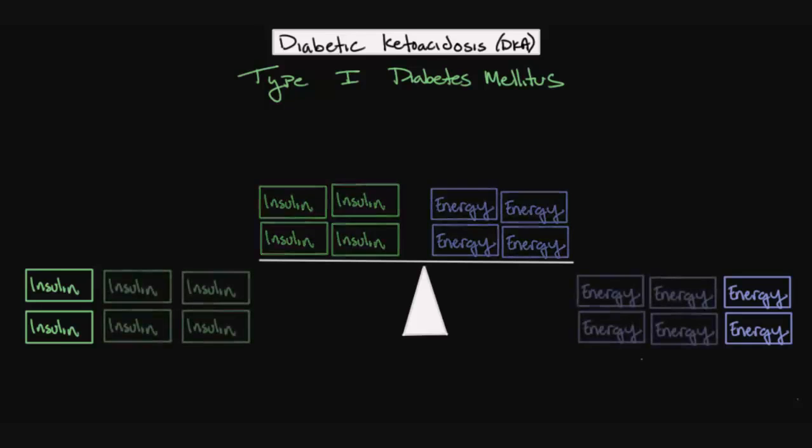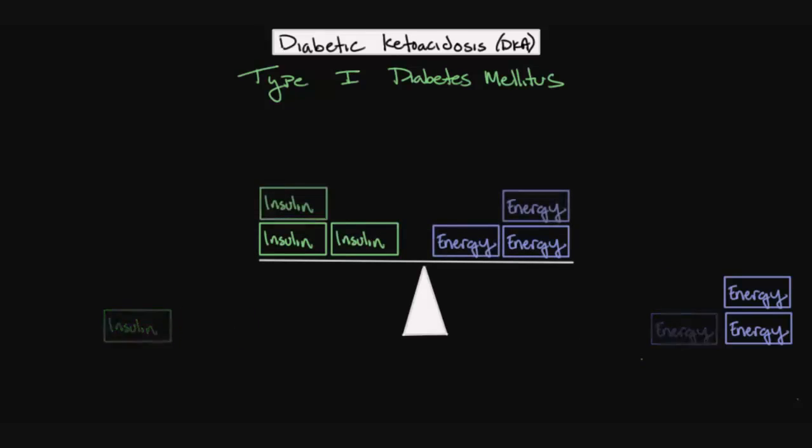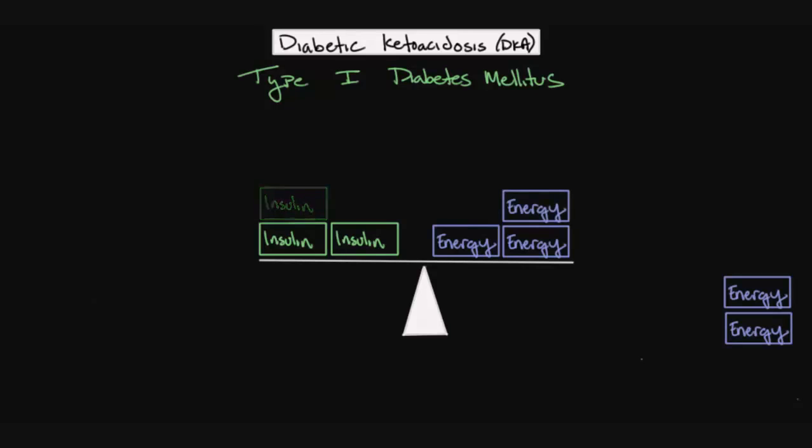But how does this change if someone has type 1 diabetes? Well, since their pancreas cannot produce as much insulin, they have an absolute insulin deficiency. Now, for day-to-day activities, this may not actually cause any problems, because the small amount of insulin that is produced is able to compensate and keep the balance in balance. However, over time, as type 1 diabetes worsens and less insulin is able to be produced, then the balance becomes slightly unequal. And this results in the subacute, or mild, symptoms of type 1 diabetes, such as fatigue, because the body isn't able to match these energy requirements.